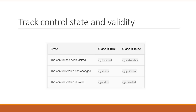The final pair of classes is concerned with the validity of the form control. If the form control's value is valid, ng-valid class is applied; if not, ng-invalid is applied. For example, if an input field contains the required attribute, it implies that a value has to be entered. If a value is missing, ng-invalid class is applied, and when a value is entered, ng-valid class is applied.